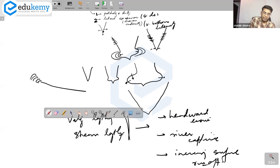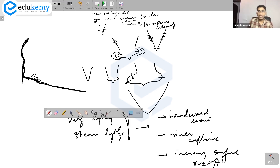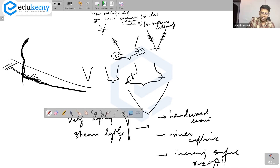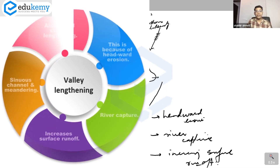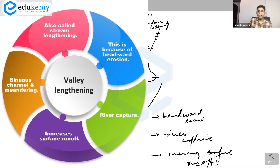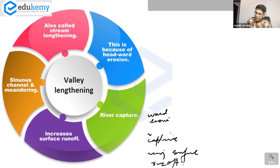Headward erosion means the river starts cutting backwards along its head. If there is another river nearby and the headward erosion joins it, the stream becomes longer. It can also be because of increasing surface runoff — as more water is added, the river can eventually become longer. The fourth reason is sinuous channels: the river starts taking left-right zigzag paths.